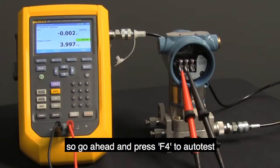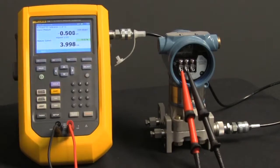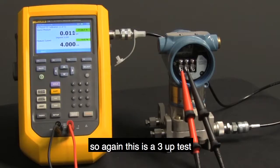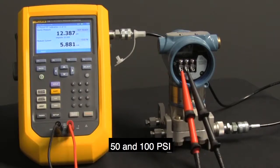So go ahead and press F4 to autotest. And the 729 is going to go to work. So again, this is a three up test. So the Fluke 729 is going to take readings at 0, 50, and 100 psi.